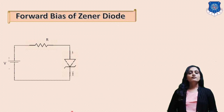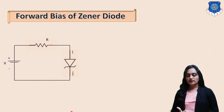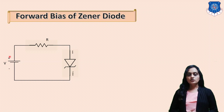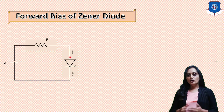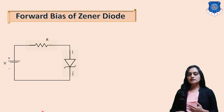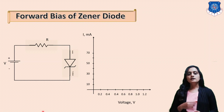Now we will see the working of Zener diode in the forward bias region. The circuit diagram consists of a DC battery, a DC voltage source, a resistor, and the Zener diode connected in series. The anode terminal of the Zener is connected to the positive terminal of the battery and the cathode terminal is connected to the negative terminal of the battery. This is how the Zener diode is connected in the forward bias region. Now we will see the VI characteristic for the Zener diode.